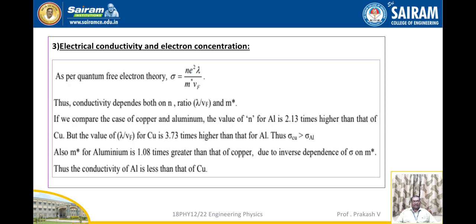The third merit is electrical conductivity and electron concentration. As per quantum free electron theory, σ equal to ne²λ by m* v_F. Conductivity depends both on n and on λ/v_F and m*. Comparing copper and aluminum: the value of n for aluminum is 2.13 times higher than that of copper, but the value of λ/v_F for copper is 3.73 times greater than that of aluminum. Thus, the conductivity of copper is greater than that of aluminum, i.e., σ_Cu > σ_Al. Also, m* for aluminum is 1.08 times greater than that of copper; due to inverse dependence of σ on m*, the conductivity of aluminum is less than that of copper.